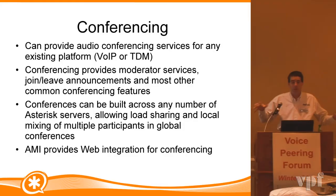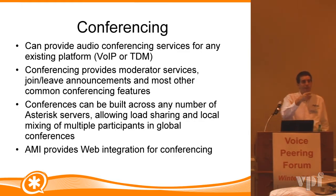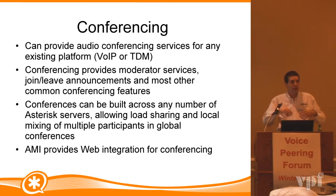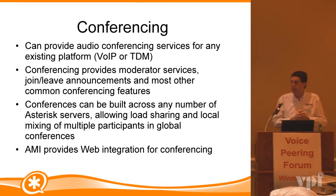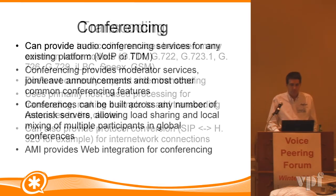They might have people in all of those locations that want to join the same conference. You don't want them all going to a single server at a single location. You have local conferences on all of them that are then mixed together. What you end up with is a very distributed network and local conferencing for people local to an office, which means low bandwidth requirements across your WAN — especially important when you have offices in LA, Tokyo, and Sydney.